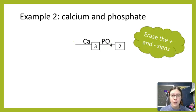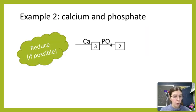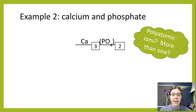Then we go ahead and get rid of those positive and negative signs. We don't need them anymore. And we have a few questions to ask ourselves. Can we reduce this? Nope. Next, do I have any polyatomic ions? Yes. And do I have more than one of them? So I look at my box, I have two. So yes, I do have more than one. So I'm going to put parentheses around the ion. So PO4, I put parentheses around it.